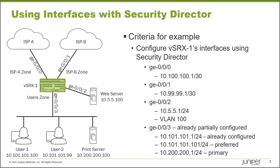In the user zone there are two users with IP addresses in the same subnet. However, the print server has an IP address in a different subnet, so we'll configure the interfaces to accommodate for that.